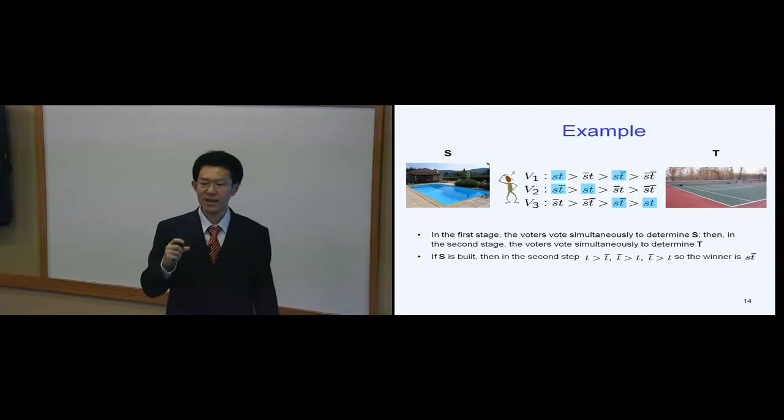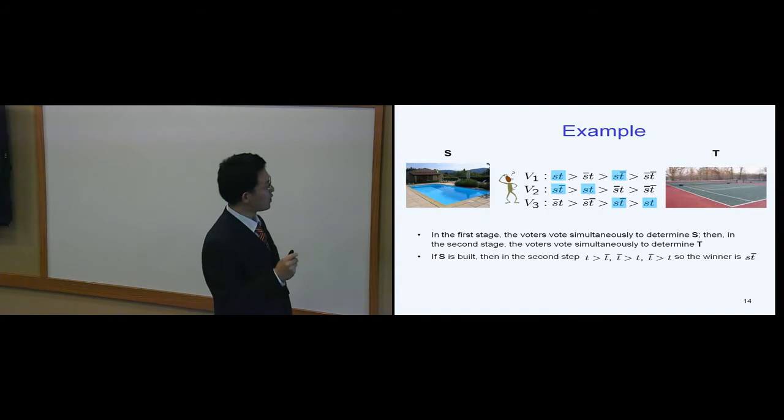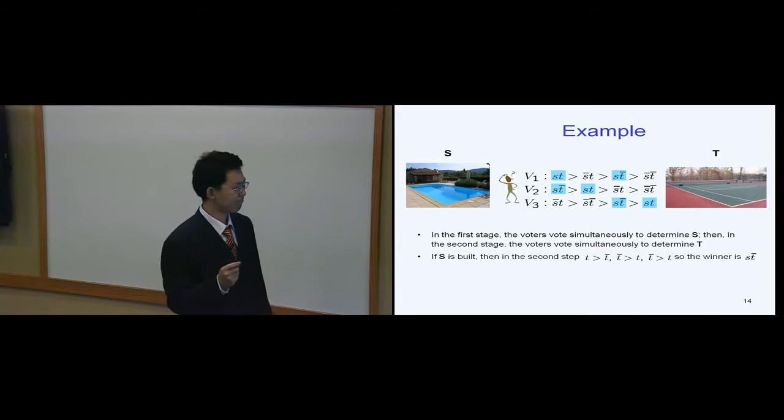Similarly, the second voter and third voter would vote not building the tennis court, and then based on the majority rule, the tennis court should not be built.